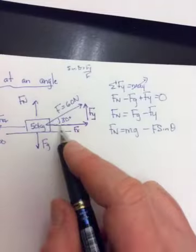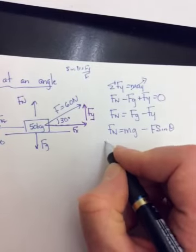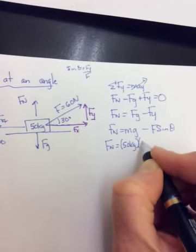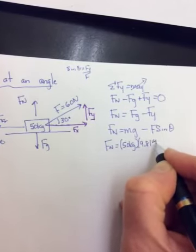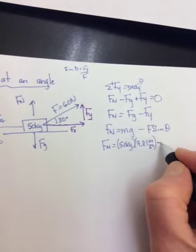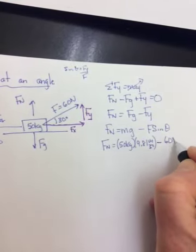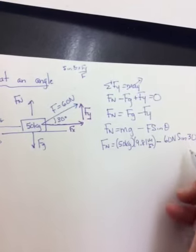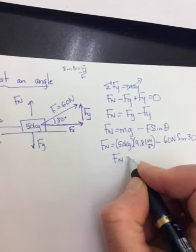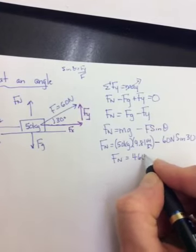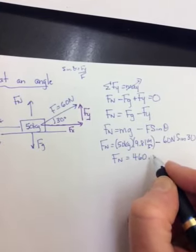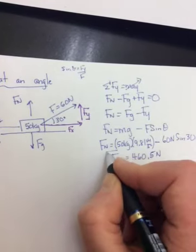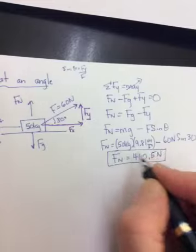Now you could find a value for this because you have everything. So if you were to do that, and maybe for this first one I will. So 50 kilograms times 9.81 meters per second squared. So 490.5 minus 60 newtons times the sine of 30. That's the other reason I'm doing it because this works out to be just 30. So your fn becomes 460.5 newtons. Just had to double check it in my head.